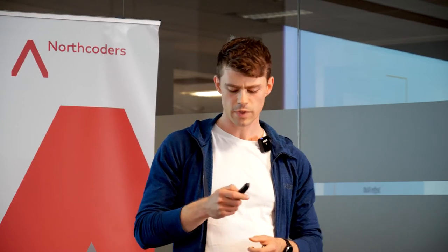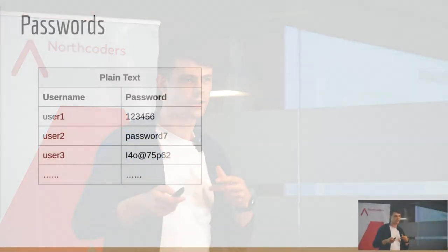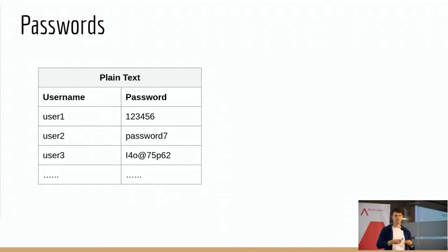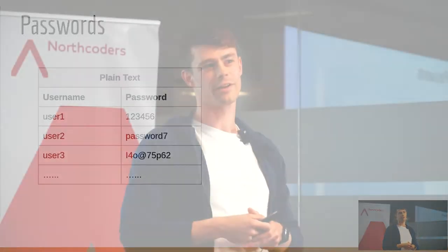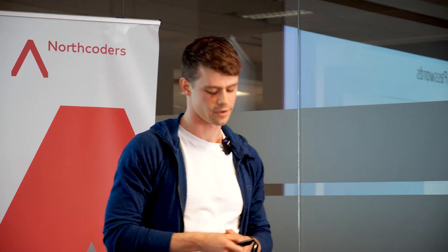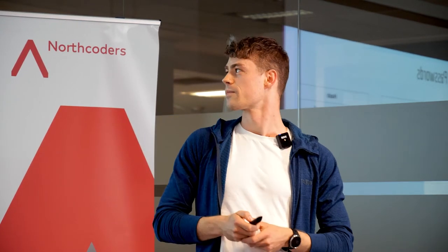Before we talk about the actual cracking methods, let's look at how passwords are actually stored. I'm going to talk about online passwords. In general there are two different ways. The obvious one: a database has two columns — username and password — stored in plain text. Plain text is a terrible idea for two reasons. First, a naughty employee with database access has all the passwords. Second, if the database leaks onto the internet, everybody has access and can log into people's accounts.